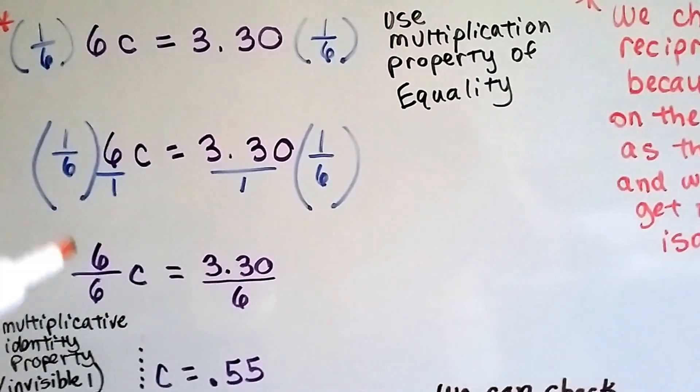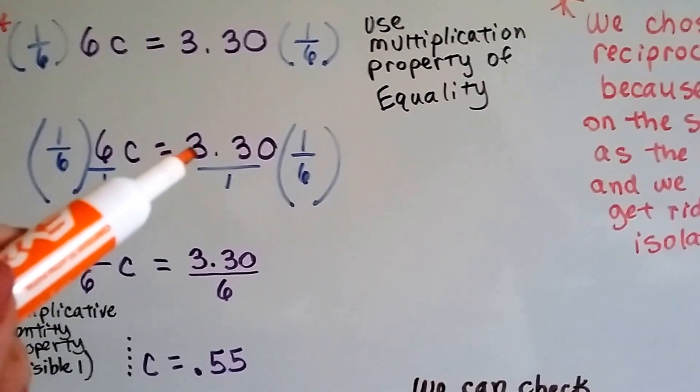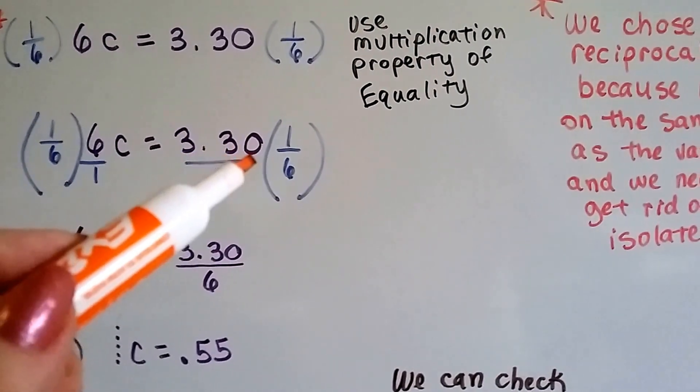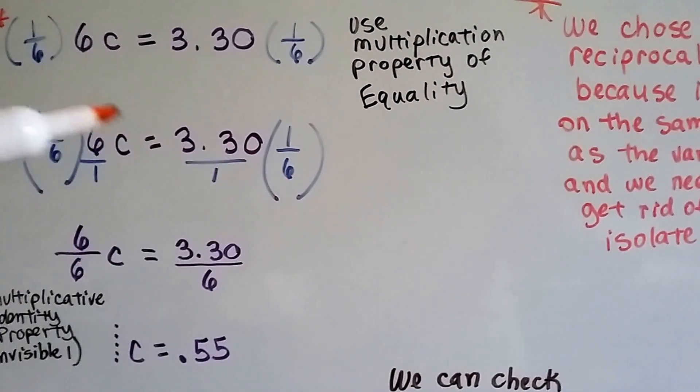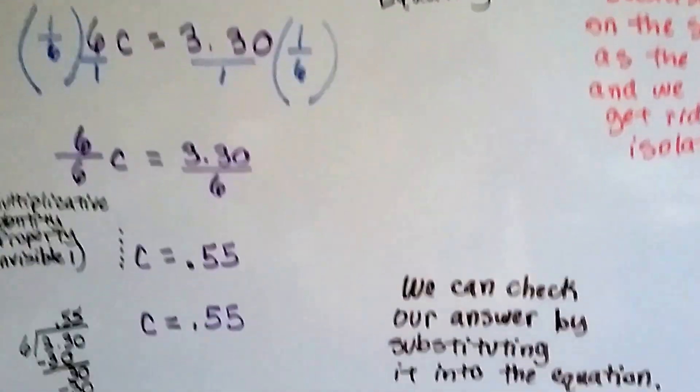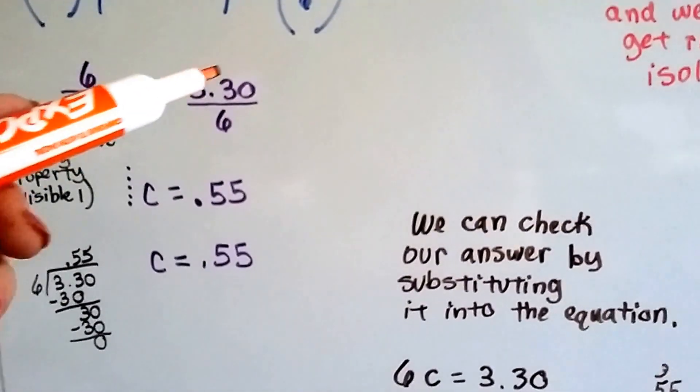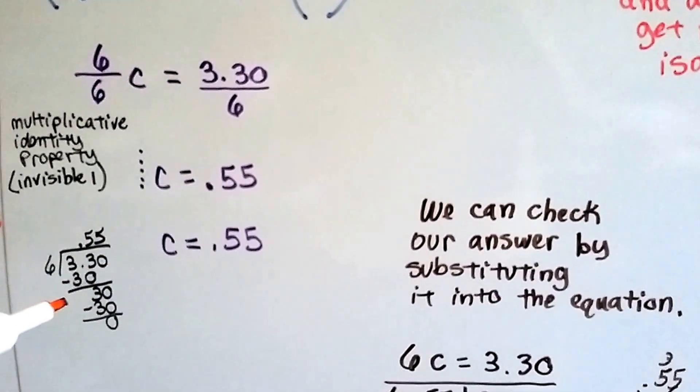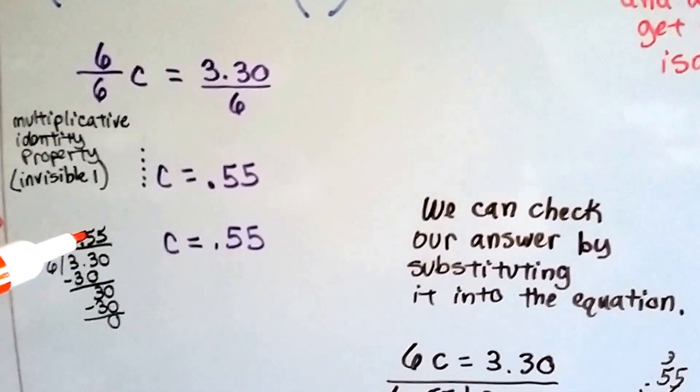And we get six over six when we multiply this side. And when we multiply 3.30 by one-sixth, we get 3.30 over six. All we have to do is divide 3.30 by six, and I do, and we get .55.